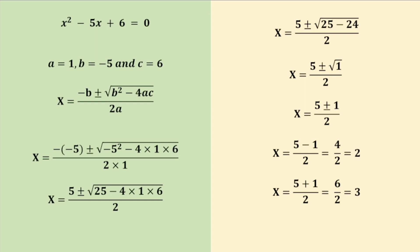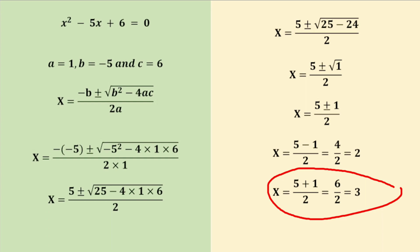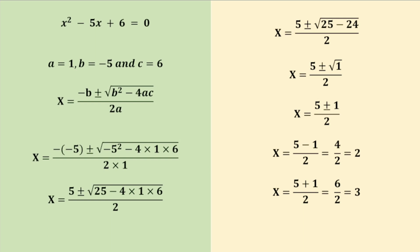So we have two solutions: x = (5 − 1)/2 = 4/2 = 2, and x = (5 + 1)/2 = 6/2 = 3. Therefore x = 2 or x = 3. As our discriminant value b² − 4ac is a positive number, we get two different real roots: 2 and 3. You can also verify the answer by substituting the value of x back into the equation; if it equals 0 then the answer is correct.